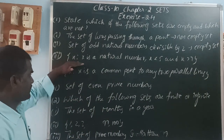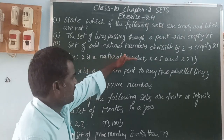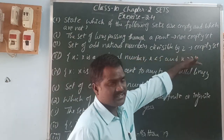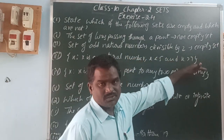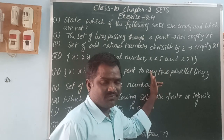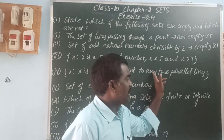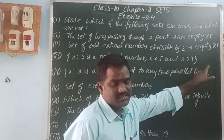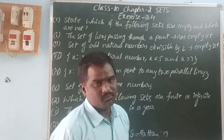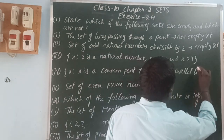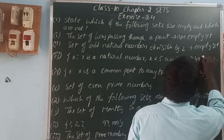Next: x is a natural number, x is less than 5 and x is greater than 7. A number cannot simultaneously be less than 5 and greater than 7 — there are no such numbers. So it is impossible, and therefore it is an empty set.